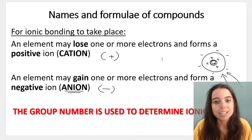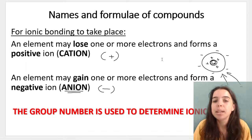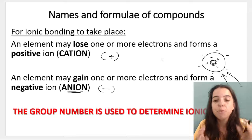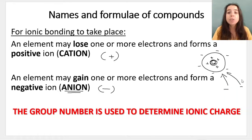For ionic bonding to take place, so remember, that's when a metal bonds with a non-metal, the following needs to happen. We have one element that will lose one or more electrons and form a cation or positive ion. Now, grade 10s, listen to me carefully. If you have electrons, electrons are negative, and you lose them, you're losing negative stuff. You're going to become more positive.